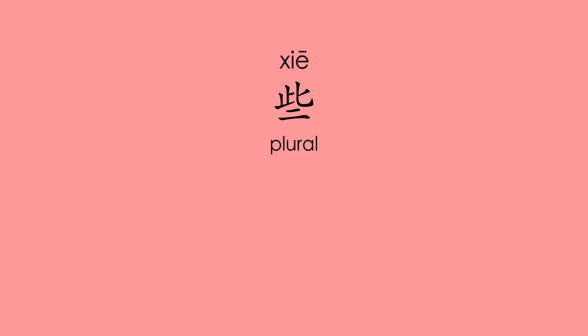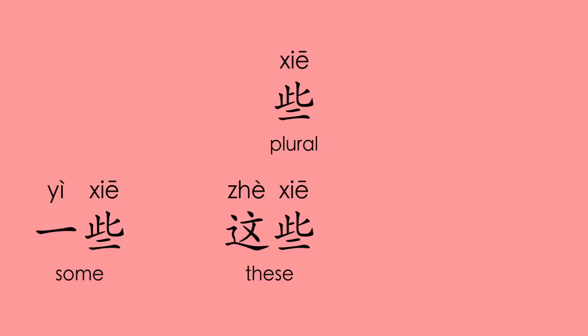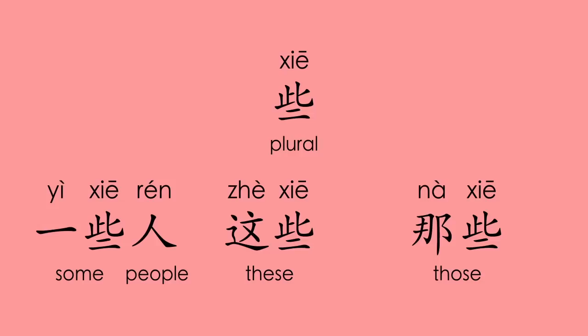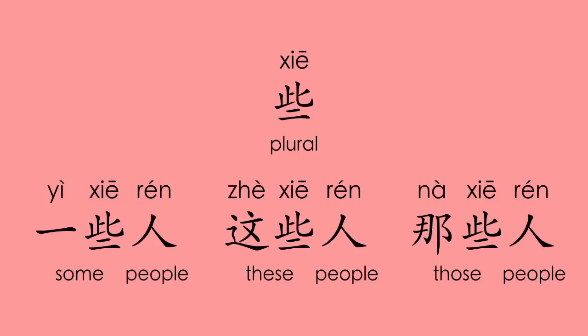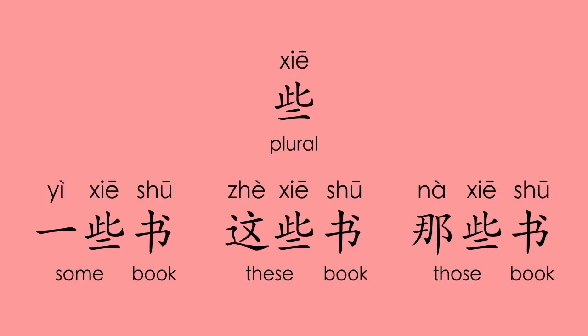些 — it indicates plural. 一些 (some), 这些 (these), 那些 (those). We can say 一些人 (some people), 这些人 (these people), 那些人 (those people), 一些书 (some books), 这些书 (these books), 那些书 (those books).